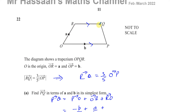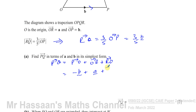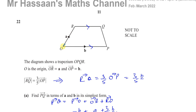R to Q, as we know, is three-fifths of O to P, which is three-fifths of vector b. So we have negative b plus a plus three-fifths b. Combining like terms: negative five-fifths b plus three-fifths b gives negative two-fifths b. So you're left with a minus two-fifths b.